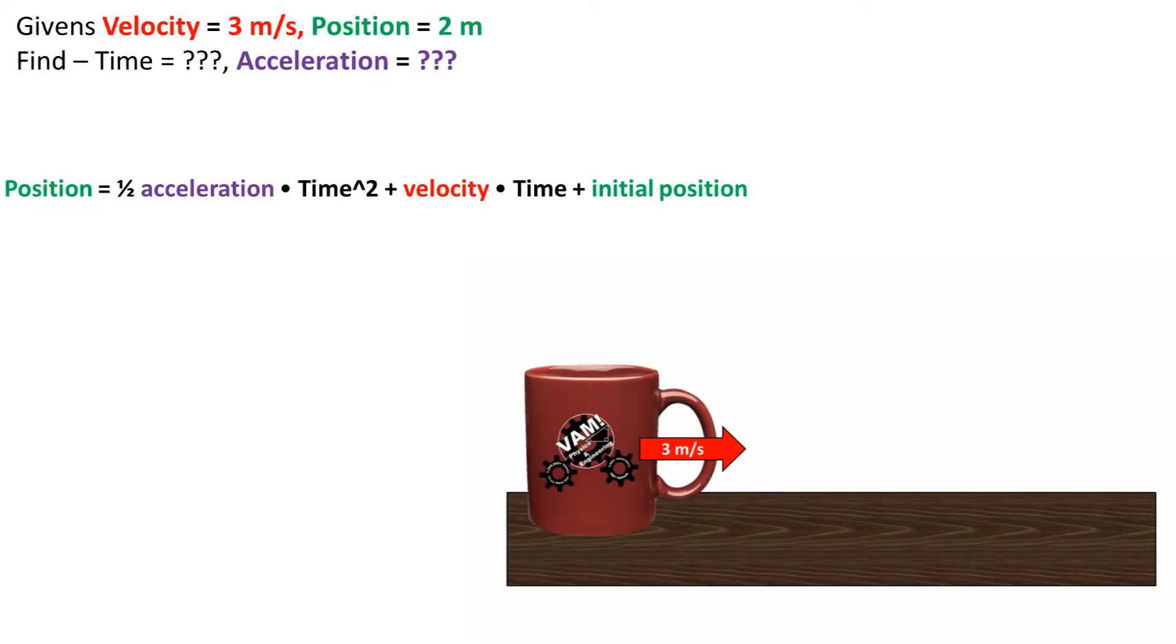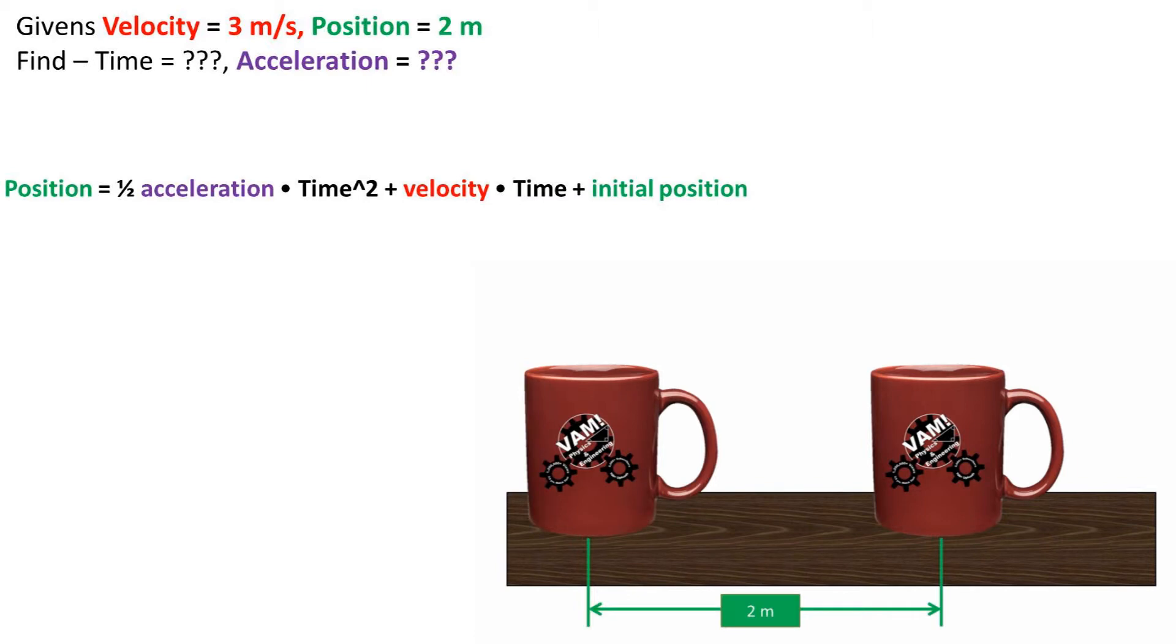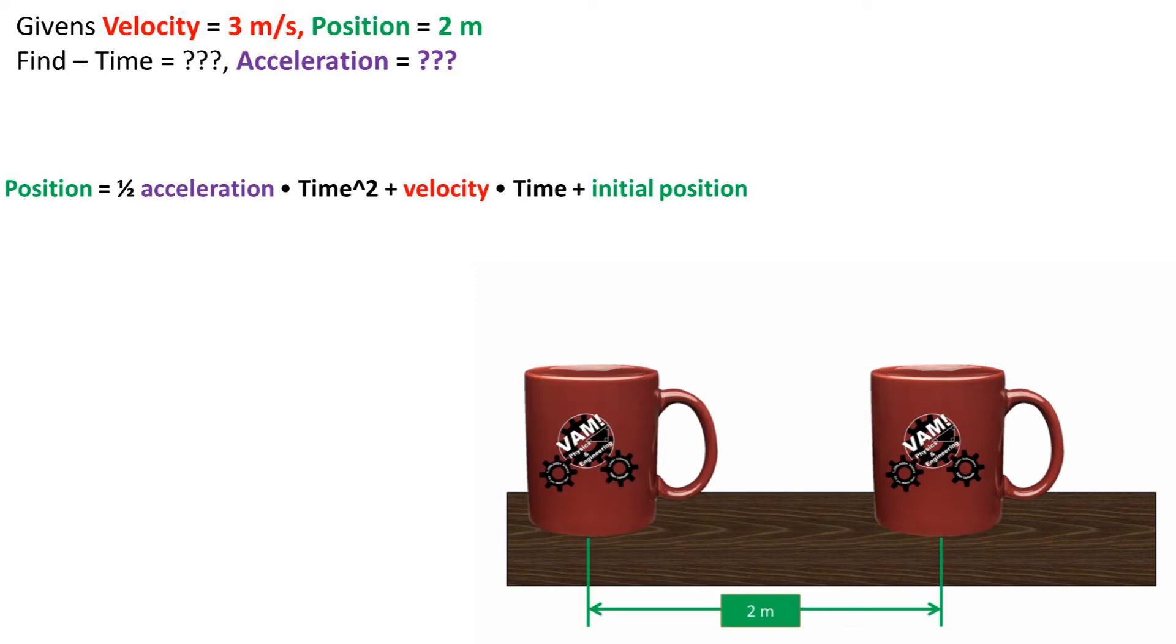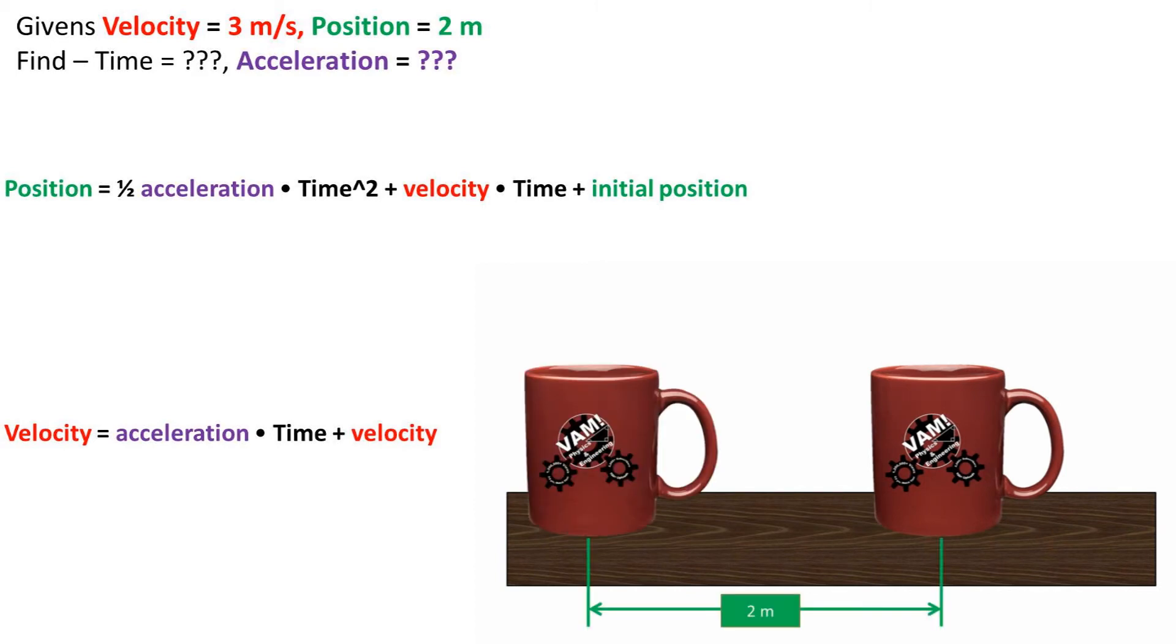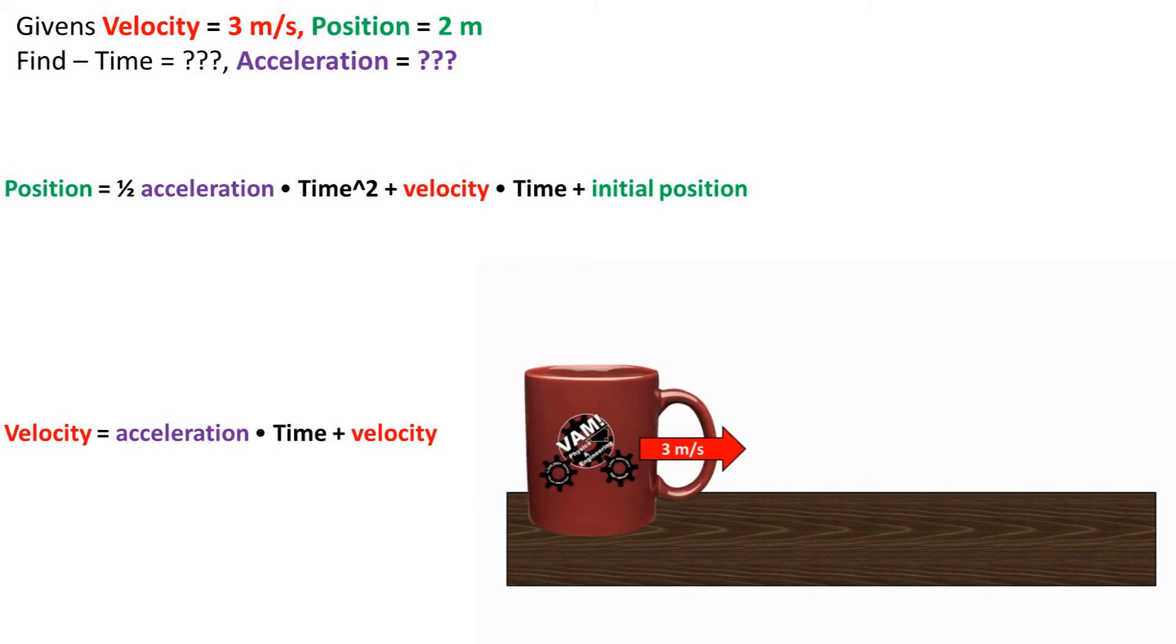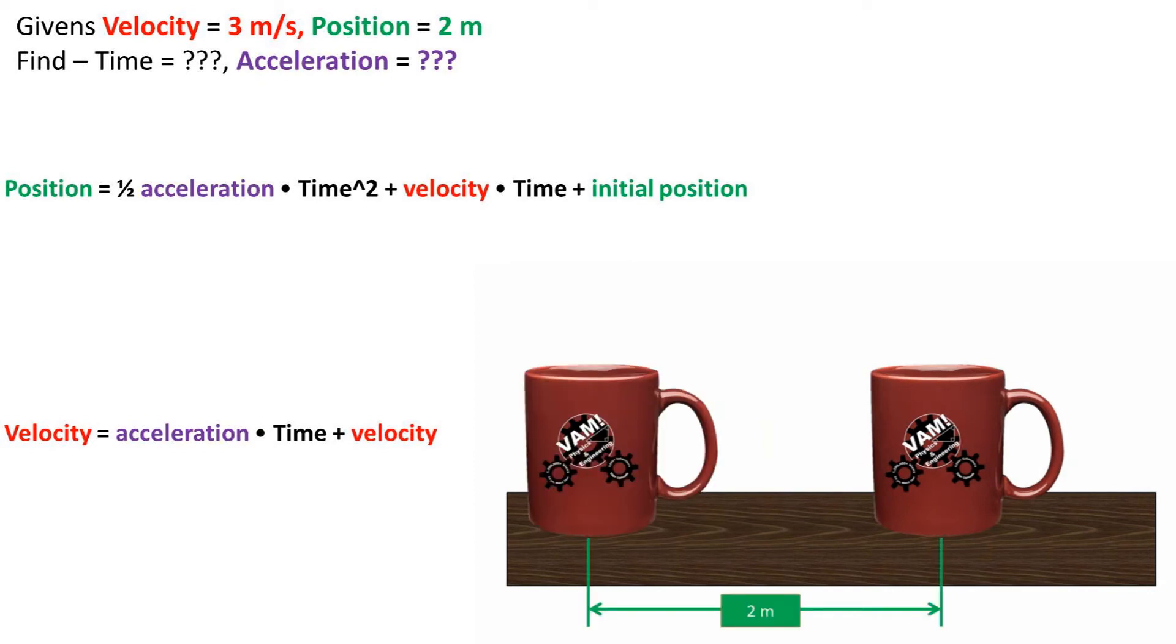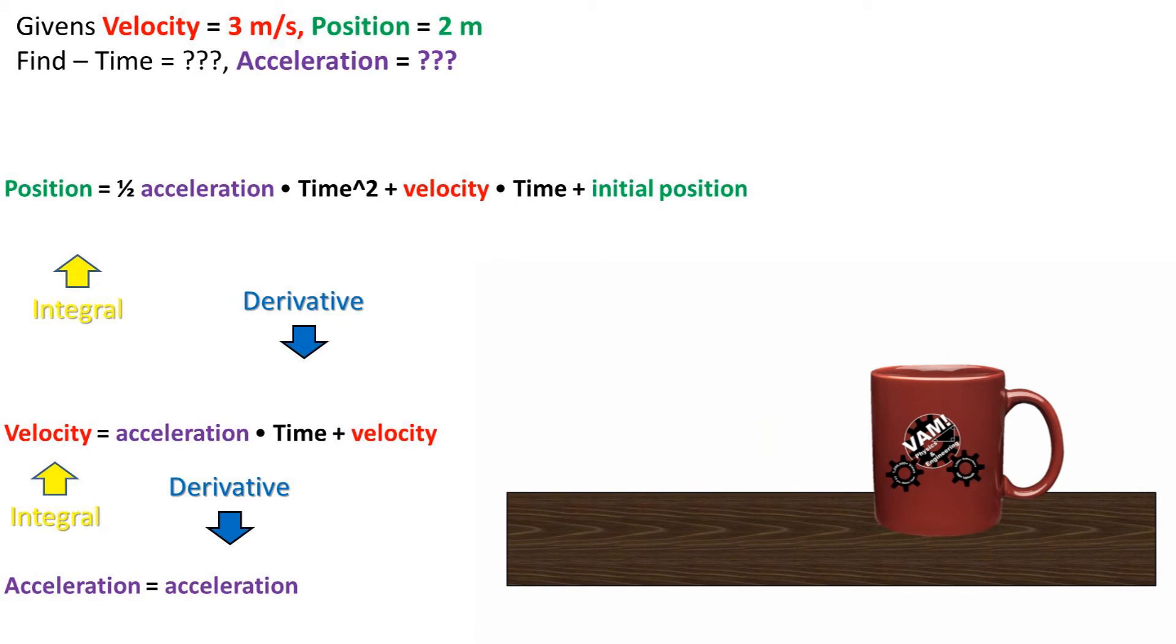To solve this problem, we'll be using the position at a given point formula, which is position equals one-half acceleration times time squared plus velocity initial times time plus initial position. And the velocity at a given point formula: acceleration times time plus initial velocity equals the velocity at a given point. It is useful to note that these equations are integrals and derivatives of one another.